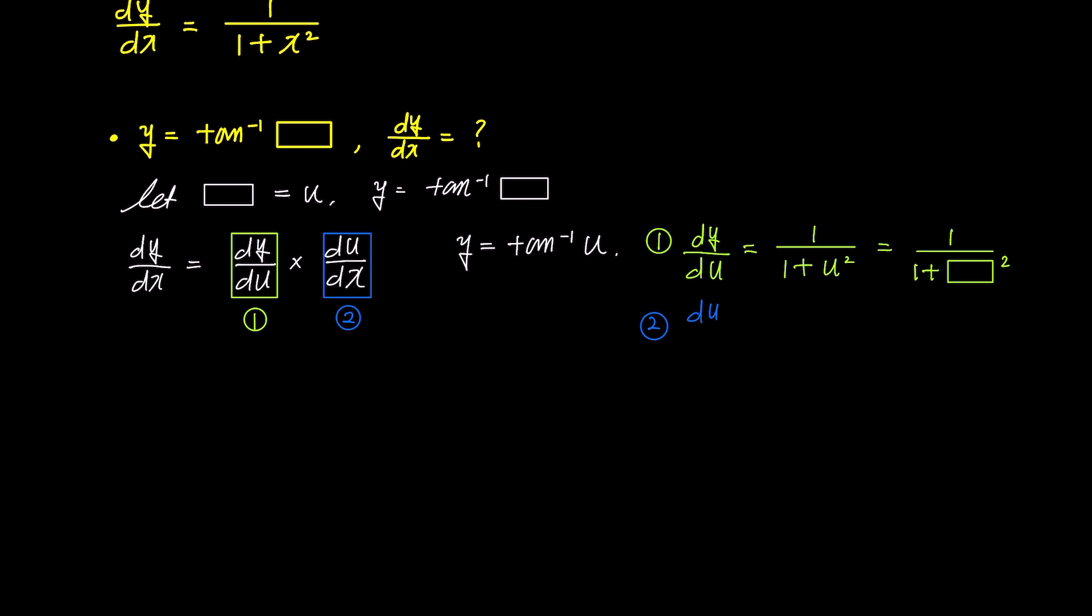Now, for 2, du over dx is simply the derivative of box with respect to x, denoted as d box over dx. When you multiply 1 and 2, we get 1 over 1 plus box squared times d box over dx.